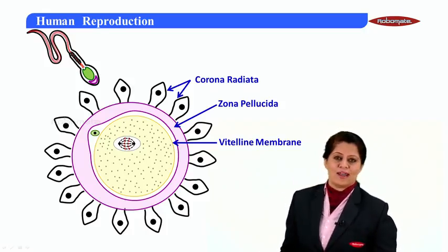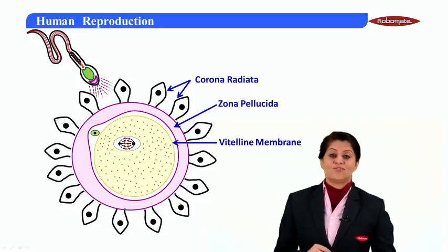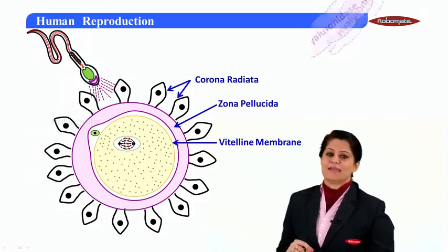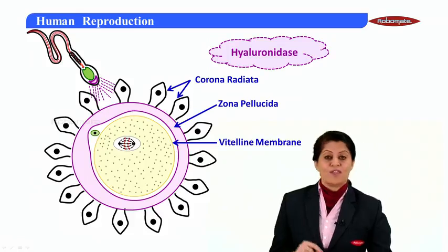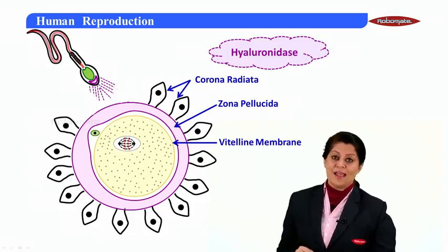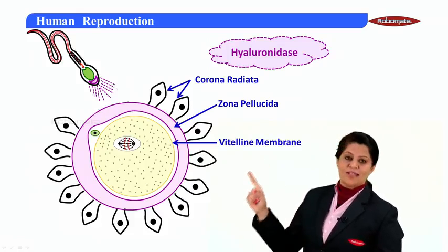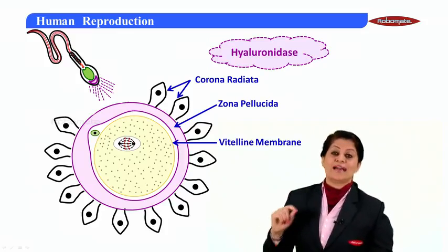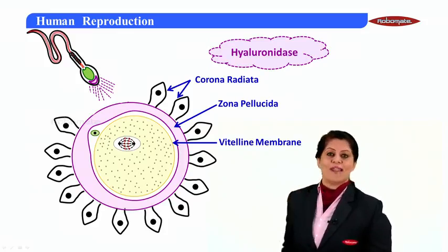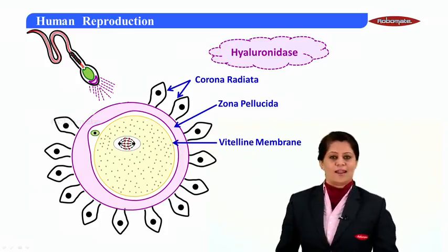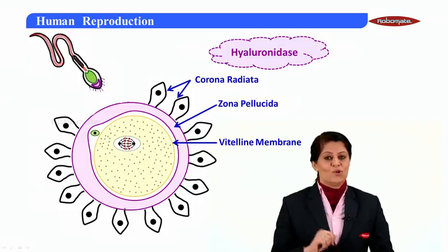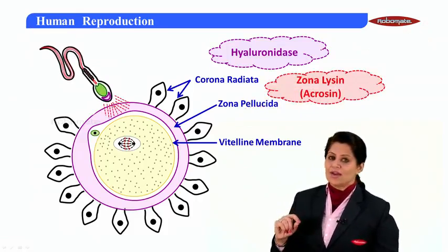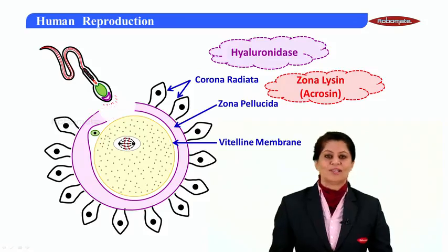Let's see the first layer, corona radiata. How does the sperm pass through it? The acrosome of the sperm releases an enzyme called hyaluronidase, which dissolves the cells of this layer. The corona radiata cells were glued together by hyaluronic acid, and that acid is destroyed by hyaluronidase. The second layer, zona pellucida, is penetrated by the release of an enzyme called acrosin, or zona lysine, which dissolves that layer.